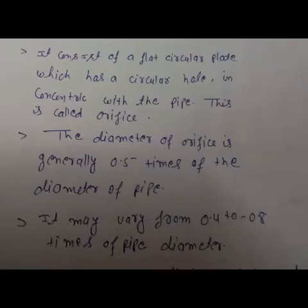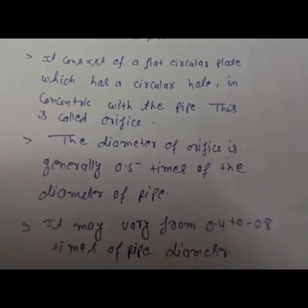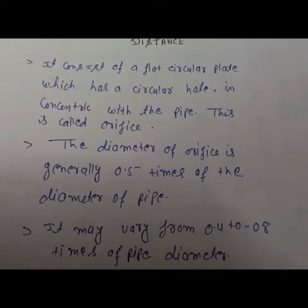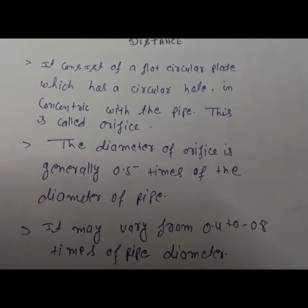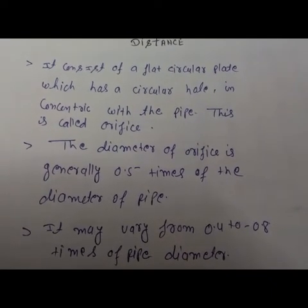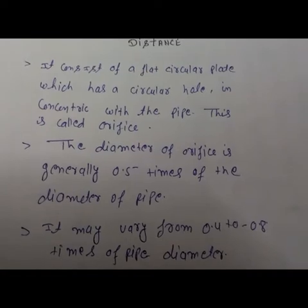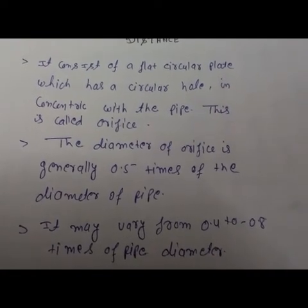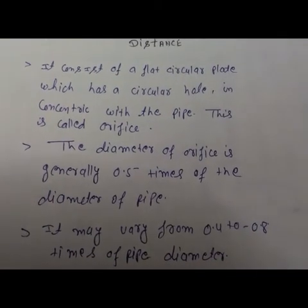This is the definition — you can write it: an orifice meter consists of a flat circular plate which has a circular hole concentric with the pipe. This arrangement is called an orifice meter.